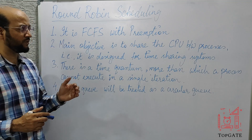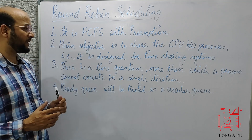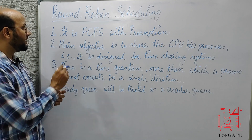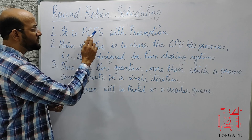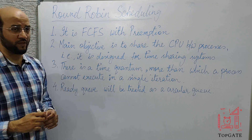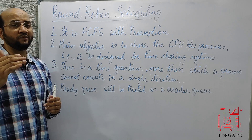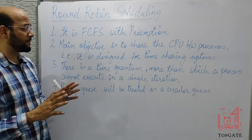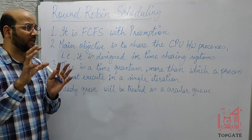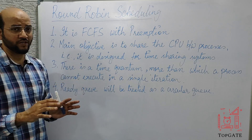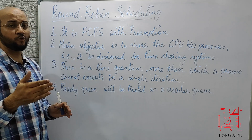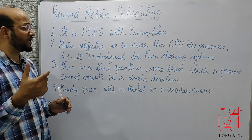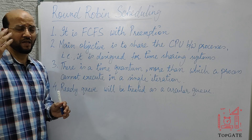Let's discuss Round Robin with a few key points and then with an example. First, it is a kind of FCFS with preemption — adding preemption to FCFS gives us Round Robin. We follow the same approach as FCFS: scheduling processes based on their arrival times, not burst time or priority.